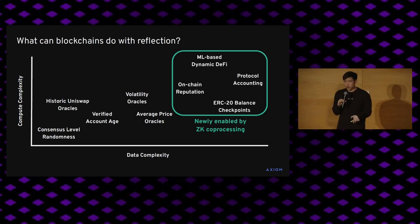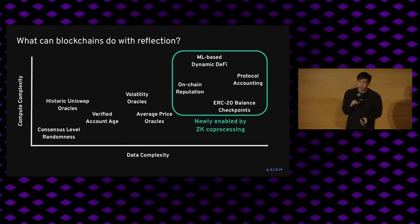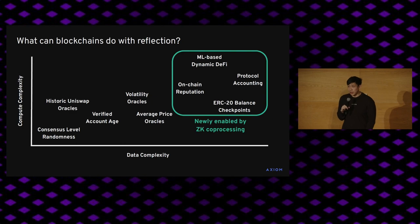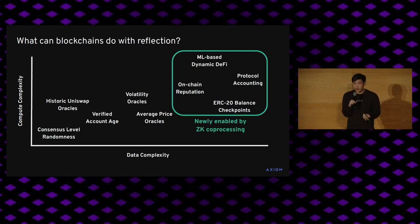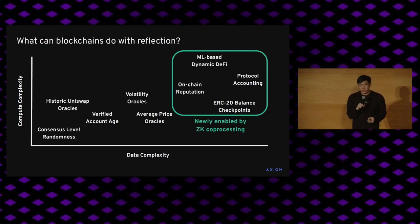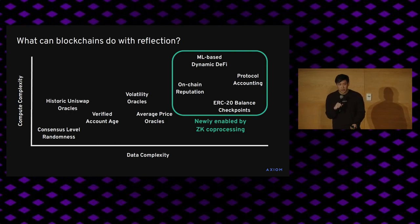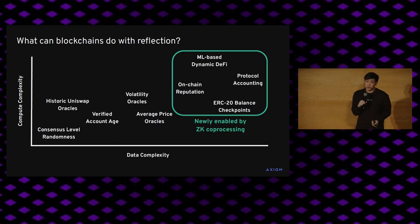If we scale up to things which require much more data complexity and much more compute complexity, then we get more novel applications which really are not accessible in the EVM today. This would be things like adjusting parameters of your DeFi protocol by applying basic machine learning algorithms to the historic performance, rewarding your protocol's participants by doing a trustless evaluation of their on-chain track record, or actually computing an on-chain credit score in a trustless fashion instead of relying on a centralized provider. We think that as developers try to use this primitive of reflection more, they'll find new ones.